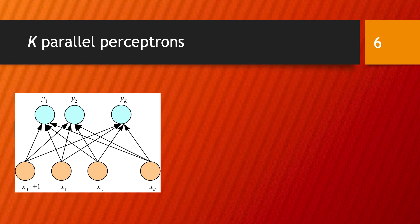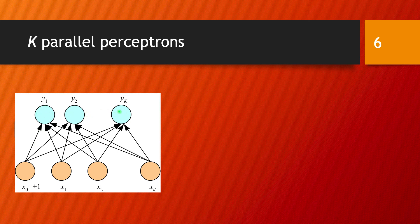We can also have an architecture with k parallel perceptrons, which builds toward more complex architectures where two layers of perceptrons feed into each other. In this case, we have k output neurons all connected to the same input components: x0 (always equal to +1), x1, x2, up to xd. The synapses connect these input neurons to output neurons y1, y2, ..., yk. This means we now have a weight matrix describing all of these synaptic connections.